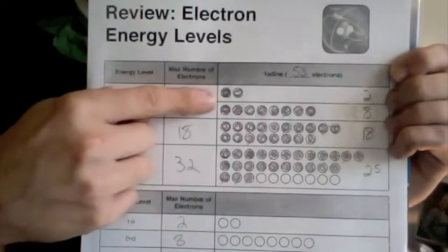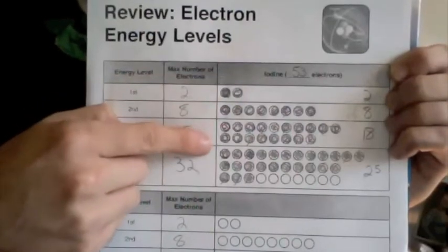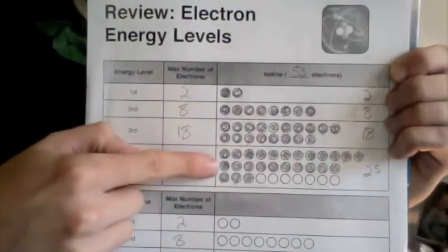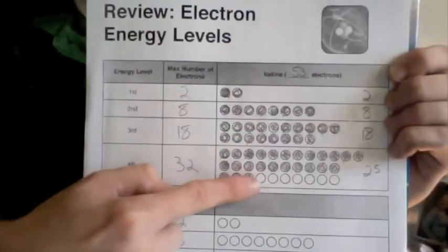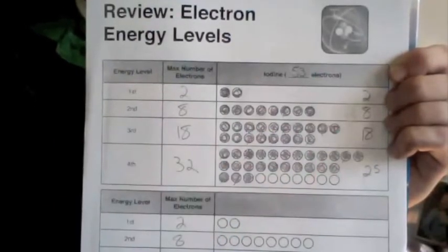So you start here, fill this in, one, two, then eight, then 18, and then 25 in this last energy level. There's a couple open spots left that iodine doesn't use, which is okay.